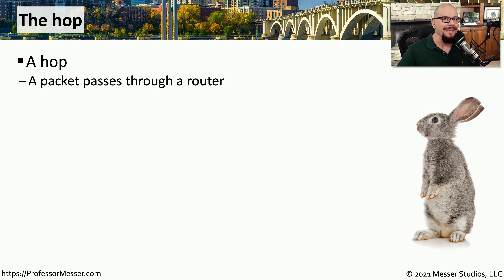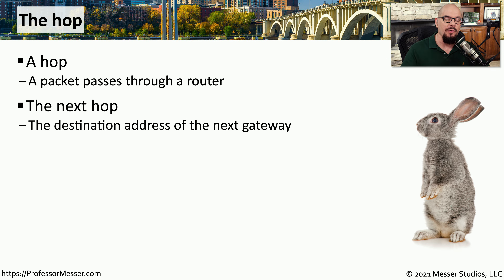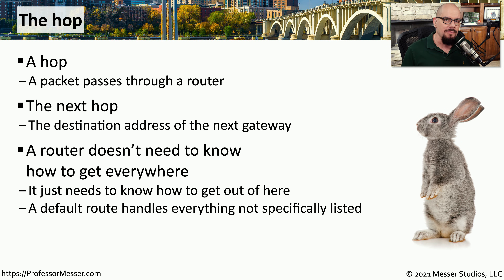Whenever we talk about what the next hop might be for a particular piece of traffic, we're referring to what router this traffic is going to. Whenever we hit that destination router or destination gateway, that is the next hop in the communication. If you look at the routing table within a single router, that router doesn't have to know the entire path from point A to point B — it only has to know what the next hop will be to get that packet on its way.